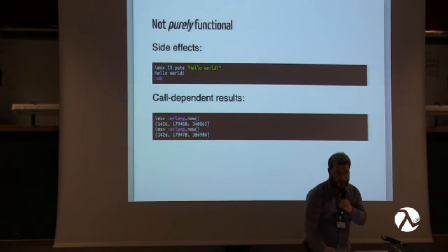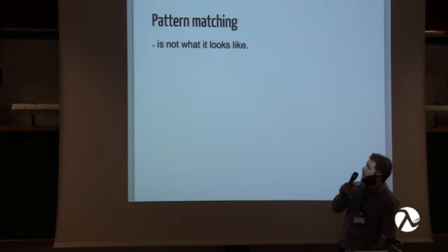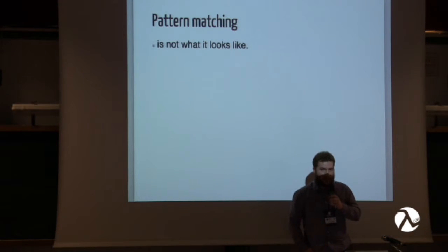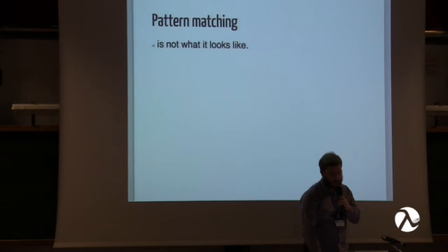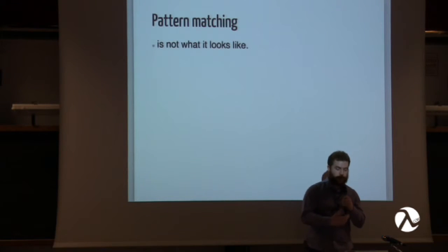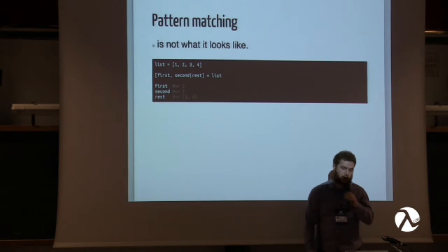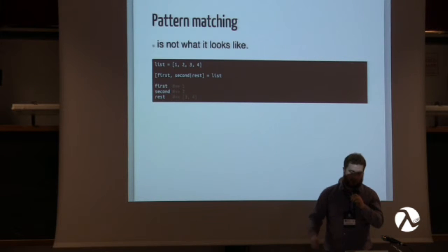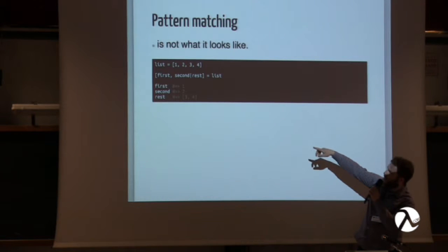One of the features I like the most is pattern matching. The equal sign is not an assignment operator in Elixir or in Erlang — it's a pattern matching operator. Pattern matching is something some languages have, but I wish more languages had, because once you use it, going back to a language without it feels really clumsy. Pattern matching is used mainly to destructure complex data and bind variables while doing it. We define a list, then pattern match on the left-hand side of the equal operator.